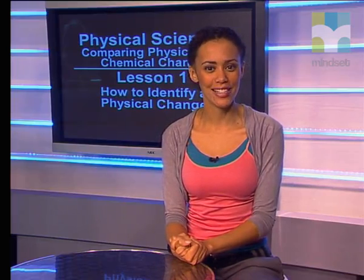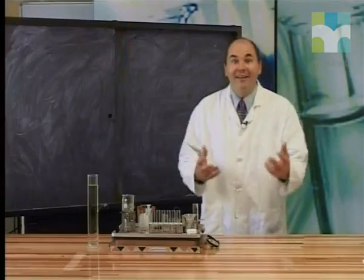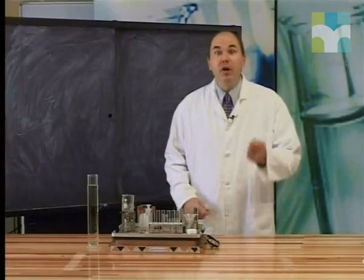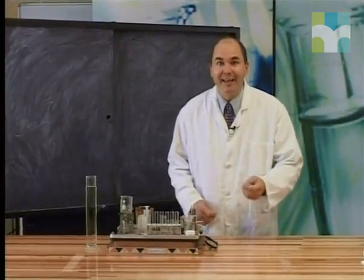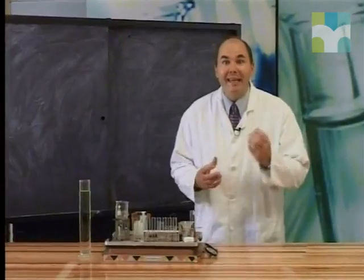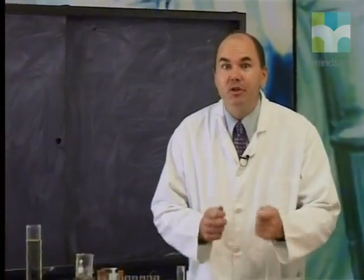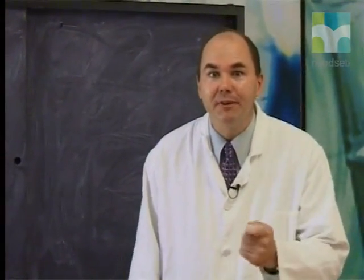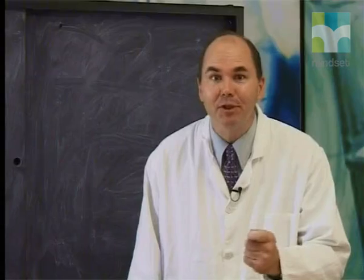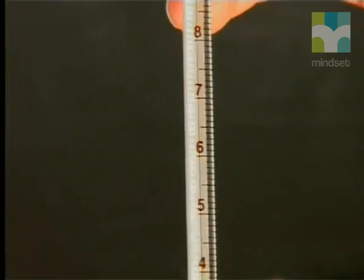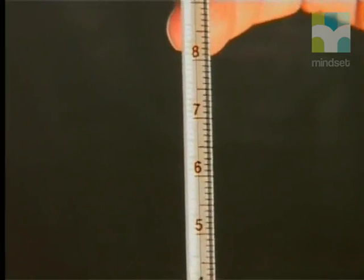We will start our investigation of physical change by looking at what happens to substances when they are heated. Let's see what John is up to in the lab. If we are going to be observing the changes taking place when we heat things, we are going to need to find a way of measuring the difference in temperature. Normally we use a thermometer to do this.